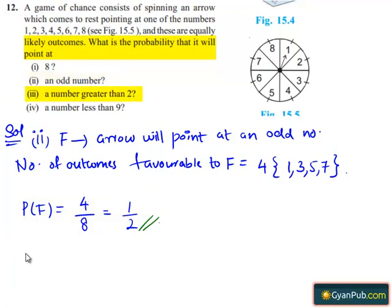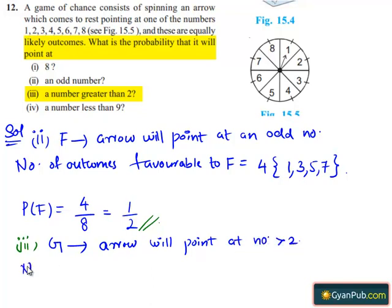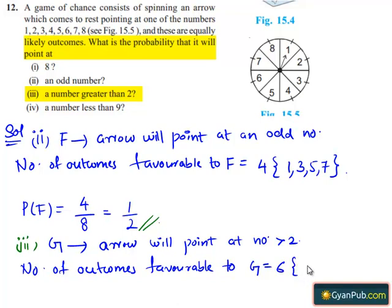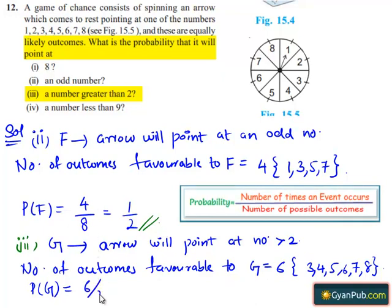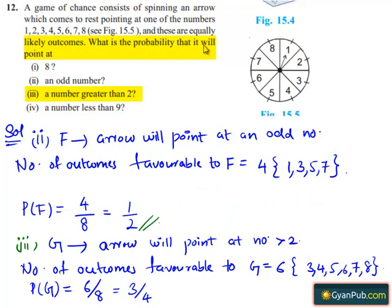Now let us see the solution for the third part. Let G be the event that the arrow will point at a number greater than 2. The number of outcomes favorable to event G equals 6, which are 3, 4, 5, 6, 7, and 8. P(G) equals 6 divided by 8. Here, 2 is a common factor; 2 goes into 6 three times and 2 goes into 8 four times. Therefore, the probability that it will point at a number greater than 2 is 3/4.